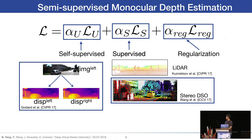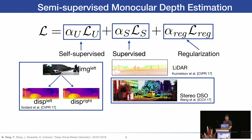To get accurate monocular depth estimation, we introduce a semi-supervised deep neural network. The loss function is a combination of self-supervised loss, supervised loss, and a regularization term. Our self-supervised loss is inspired by Godard et al., and from a single left image, the network predicts both the left and right disparity maps. Instead of using LiDAR ground truth, we use stereo visual odometry — specifically stereo DSO by Wang et al. — to collect sparse depth data as the supervision signal. The regularization term handles occluded and texture-less areas.